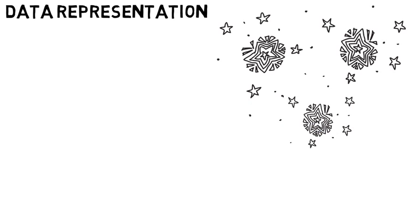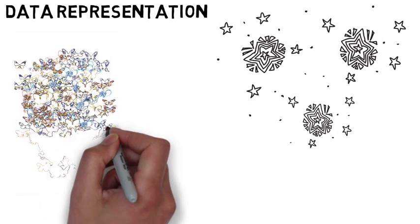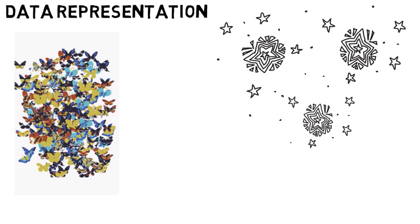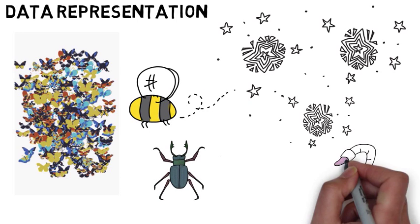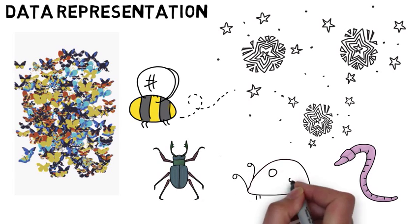Without identifying the different characteristics of data, it's like looking at a sea of insects as a heaving mass of movement, rather than identifying each insect by its species or its purpose.